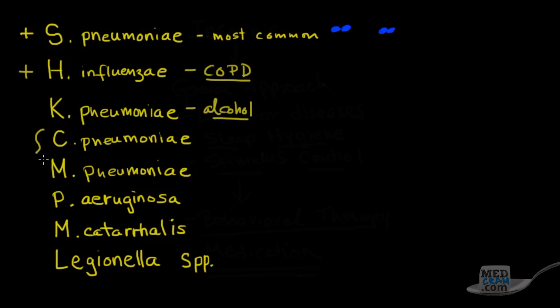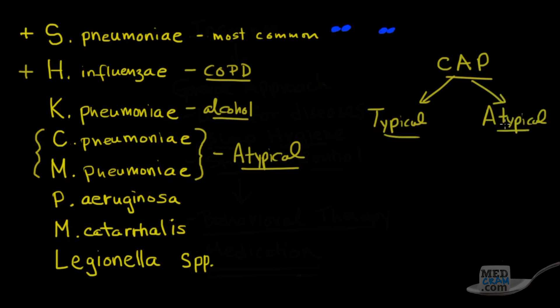These two right here, chlamydia pneumoniae and mycoplasma pneumoniae are bacteria that do cause pneumonia, but they cause a different clinical syndrome. Whereas these ones that we've talked about up here cause a typical type of pneumonia, these are very commonly called an atypical. Now be aware that atypical pneumonia and typical pneumonia are still under the umbrella of community-acquired pneumonia, which is what the question was dealing with.